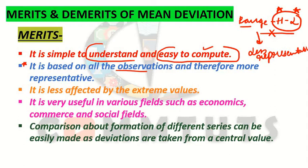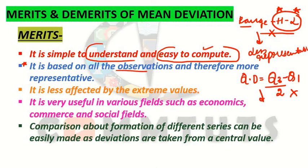Whereas if we talk about the second method of measure of dispersion — quartile deviation — its formula is Q3 minus Q1 divided by 2. In the case of quartile deviation, the starting 25% and the ending 25% of the data are not considered at all. Only the quartiles — the third quartile and the first quartile — are considered and their difference is divided by two. So here also not all observations of your data are included. This is why quartile deviation is also a less representative method.